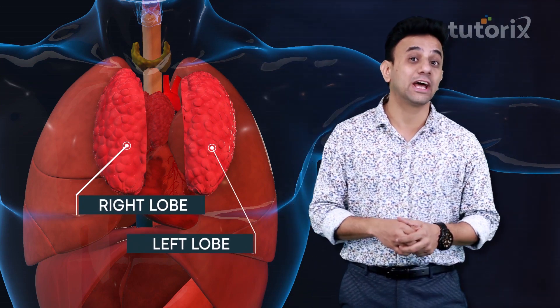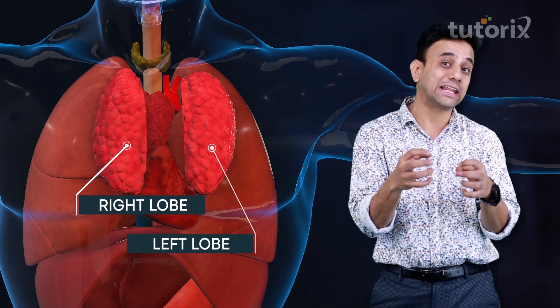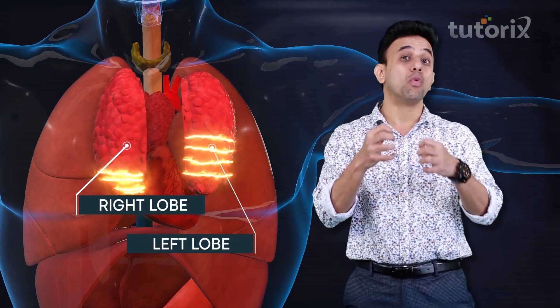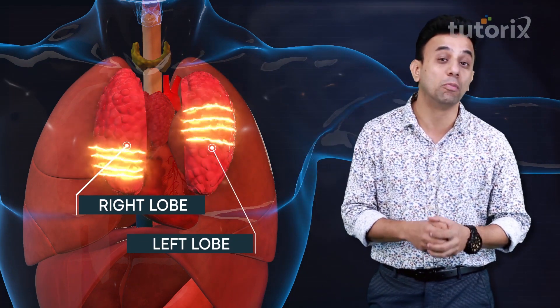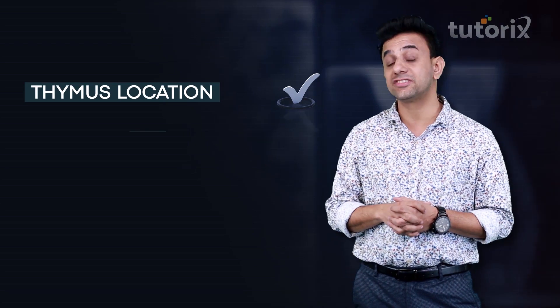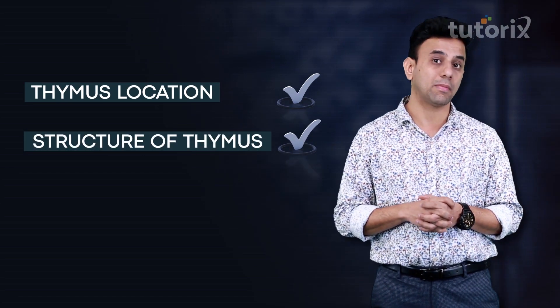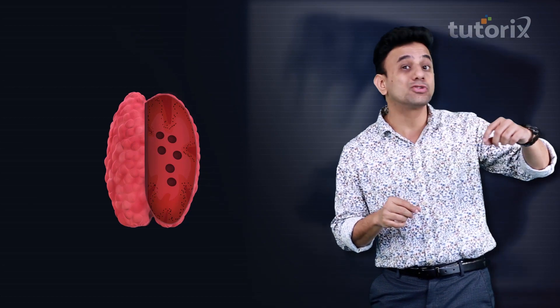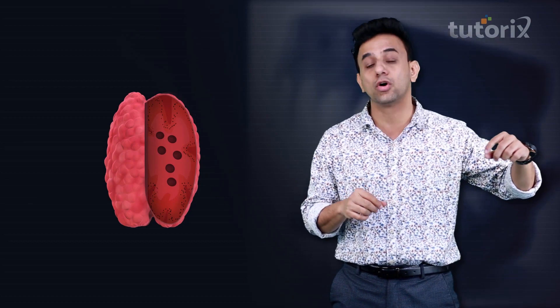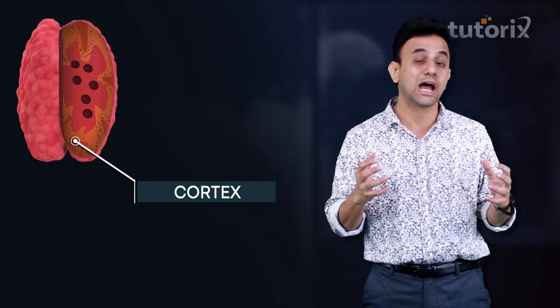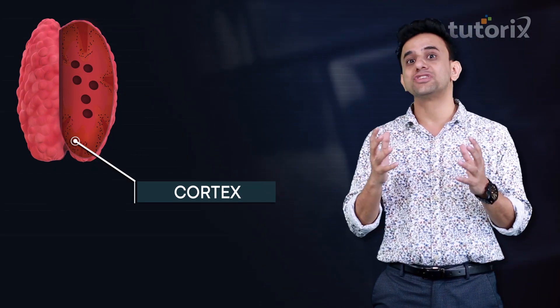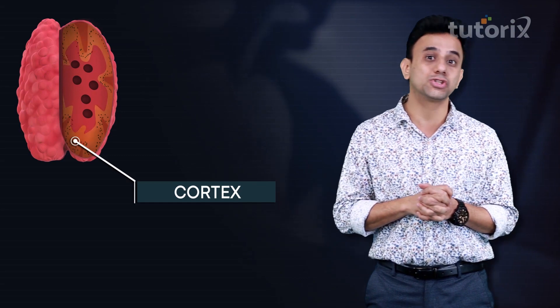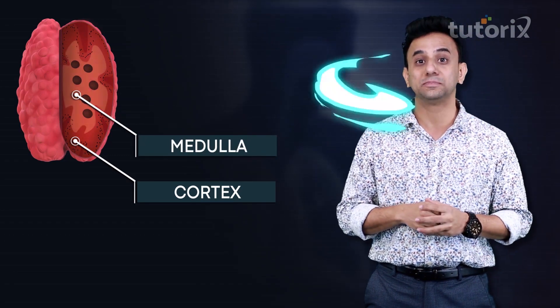An enveloping layer of connective tissue connects the two lobes together, but there is also a layer of connective tissue which separates the two lobes from one another. When stained, each thymic lobule differentiates into two important regions: the outer peripheral part known as the cortex region, which is deeply stained, and the central region which is lightly stained, known as the medulla.